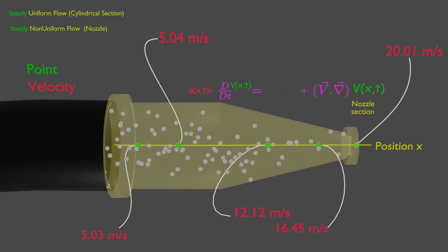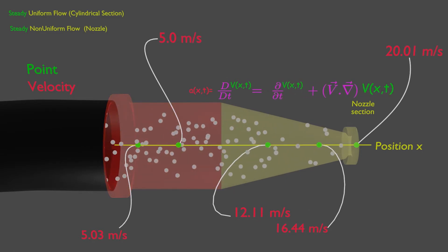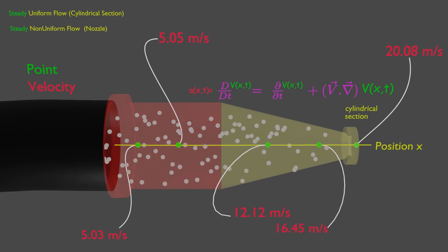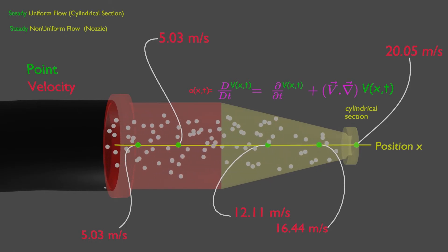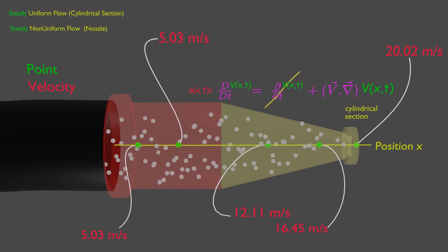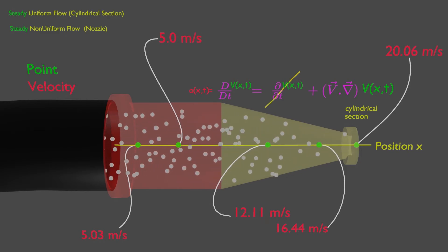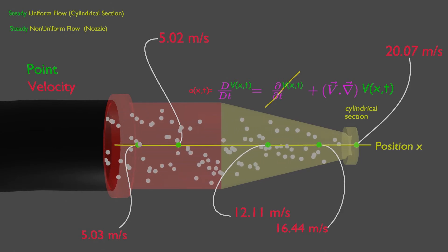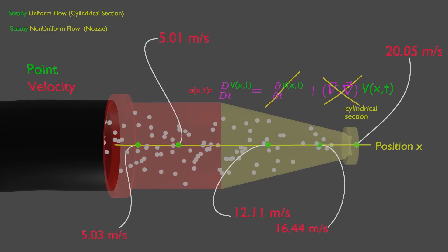But what about acceleration on cylindrical section of this nozzle? Do acceleration exist on this location? Well, the flow is steady so the first term on the right side cancels out. Also the flow is uniform, as the velocity is not changing with position. So in this case the second term also cancels out. Hence the acceleration is zero.